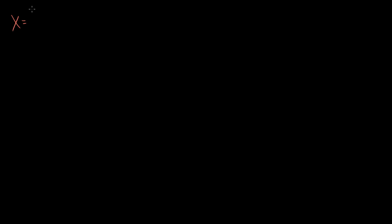So let's say I have some matrix — let's call it matrix X. I'll start with the 2 by 2 case. Let's say matrix X is A, B on the first row, and then X1, X2 on the second row. I could have called these C and D, but you'll see why I call them X1 and X2 in a second.